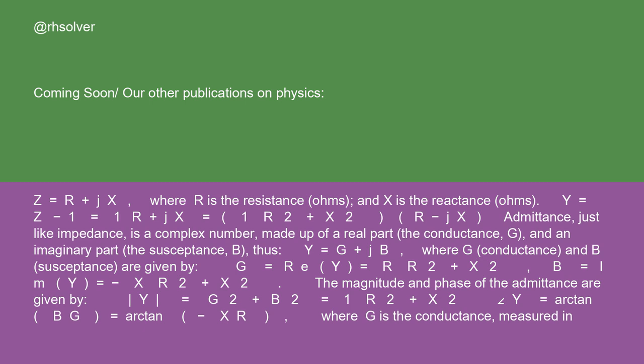Y = Z⁻¹ = 1/(R + jX) = 1/(R² + X²)(R - jX). Admittance, just like impedance, is a complex number made up of a real part, the conductance G, and an imaginary part, the susceptance B. Thus, Y = G + jB.